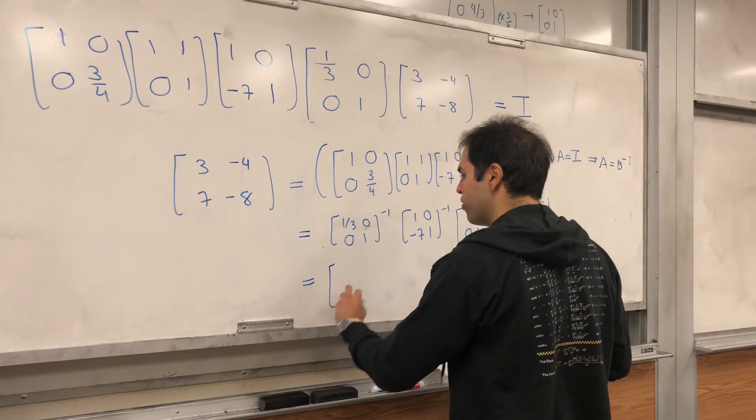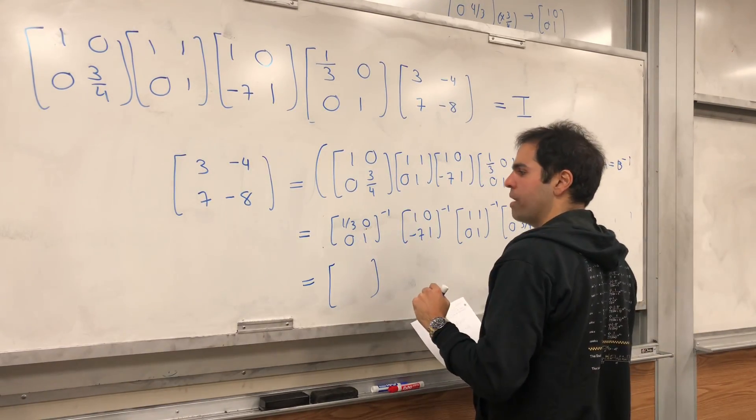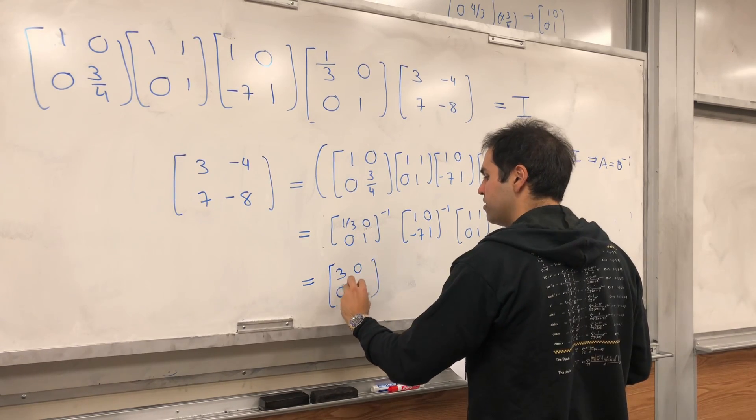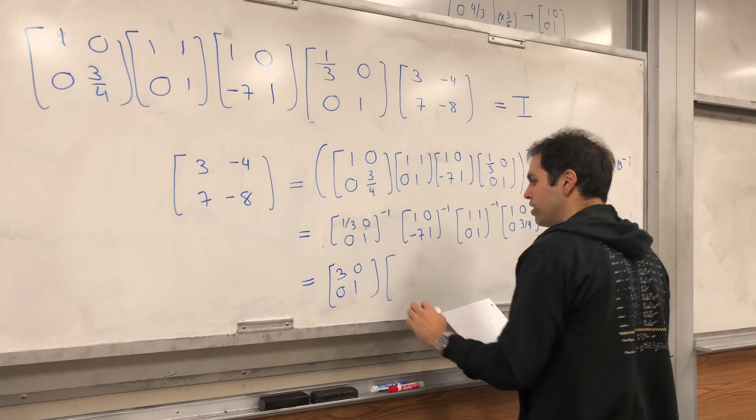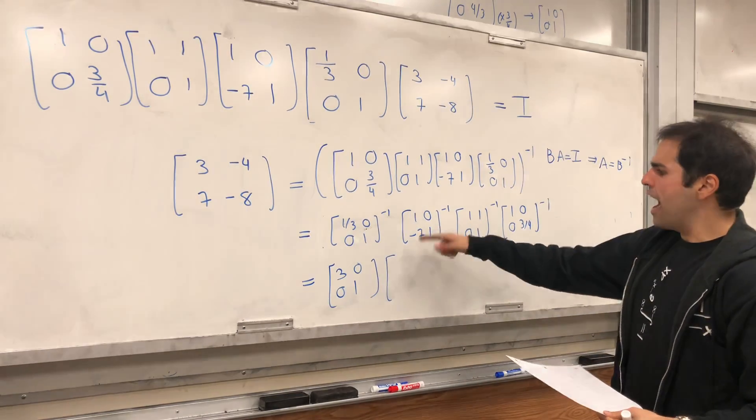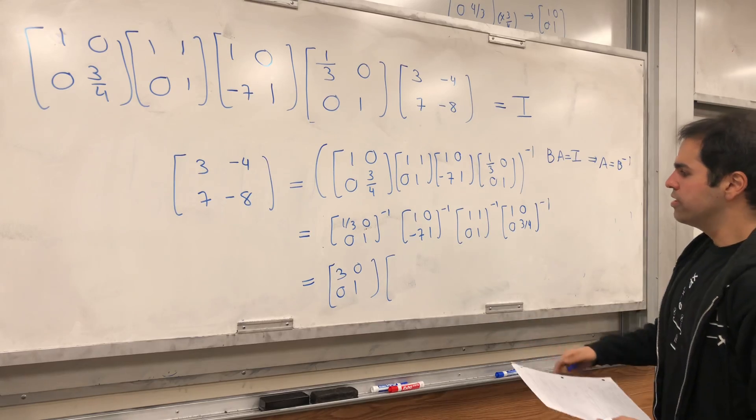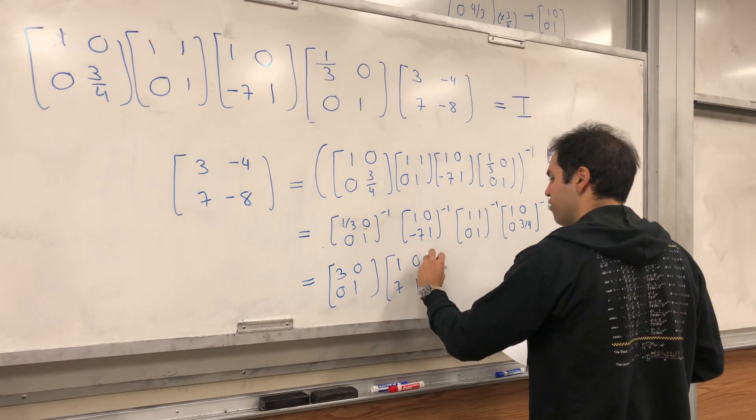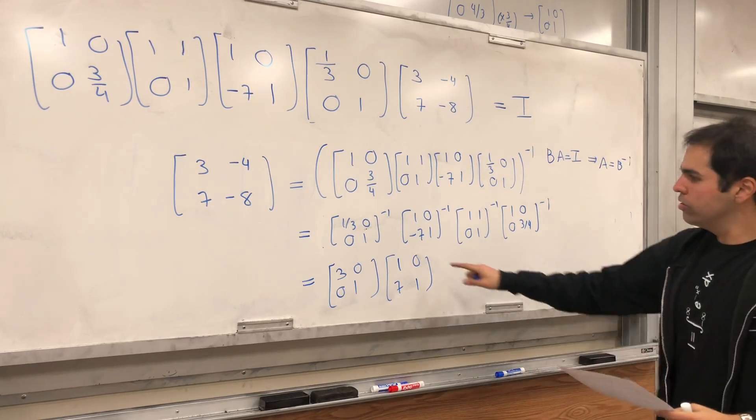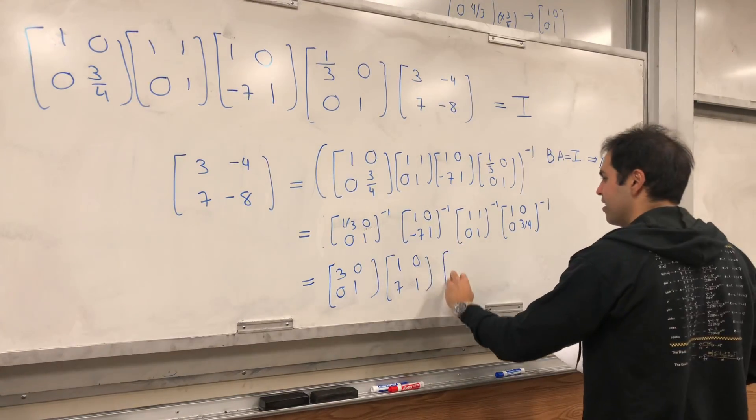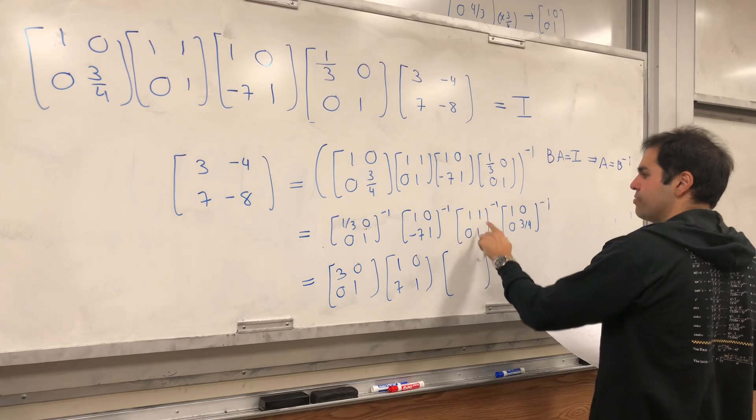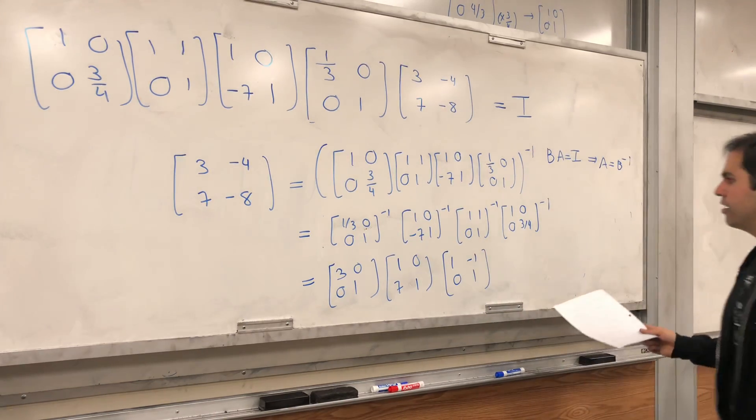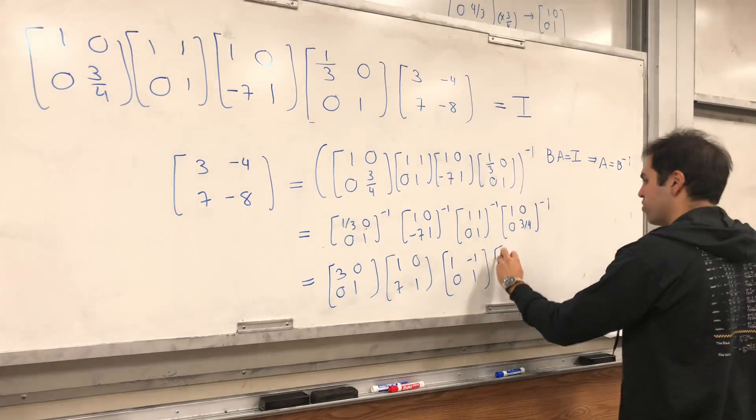Because, what's the inverse of multiplying the first row by 1 third? It's multiplying the first row by 3. So, 3, 0, 0, 1. What's the inverse of adding minus 7 times the first row to the second row? Well, it's adding 7 times the first row to the second row. So, you replace this minus 7 by 7. And, again, this 1 becomes minus 1. And, lastly, this 3 quarters becomes 4 thirds.